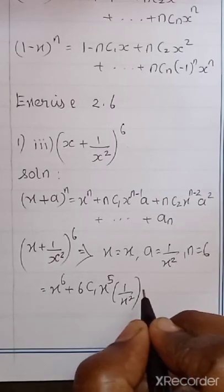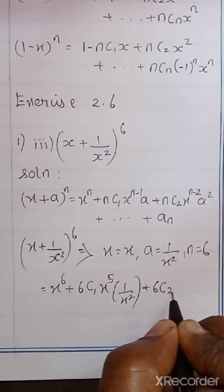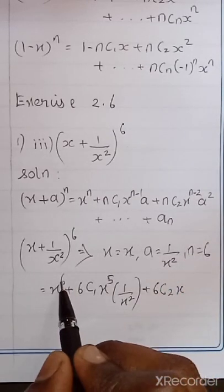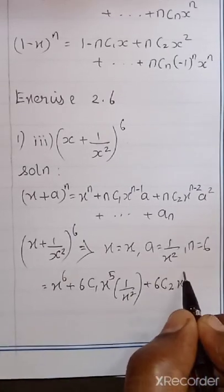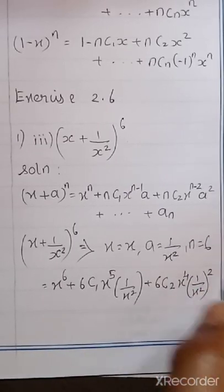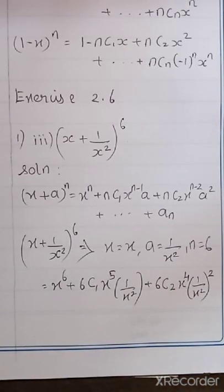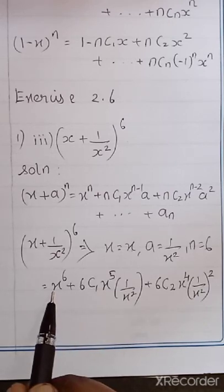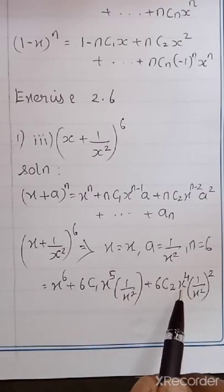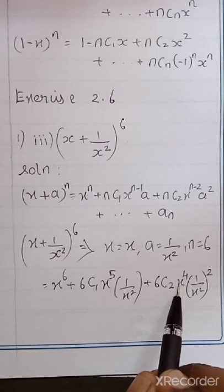Starting the expansion: X power 6, then X power 5, X power 4, X power 3, X power 2, X power 1, X power 0. For the A term: A power 0 at start, then A power 1, A power 2, A power 3, A power 4, A power 5, A power 6. The coefficients go 6C1, 6C2, continuing in sequence.